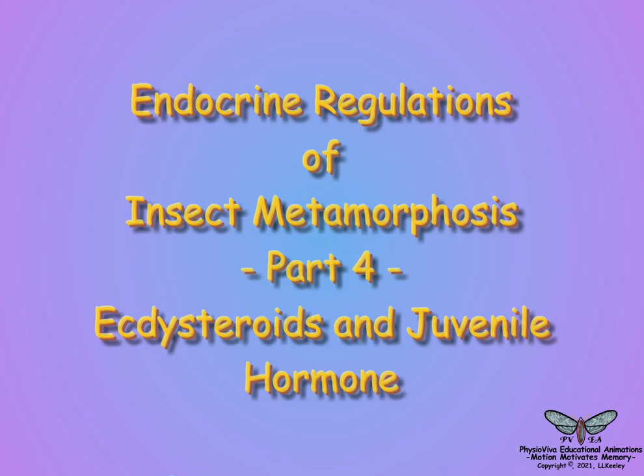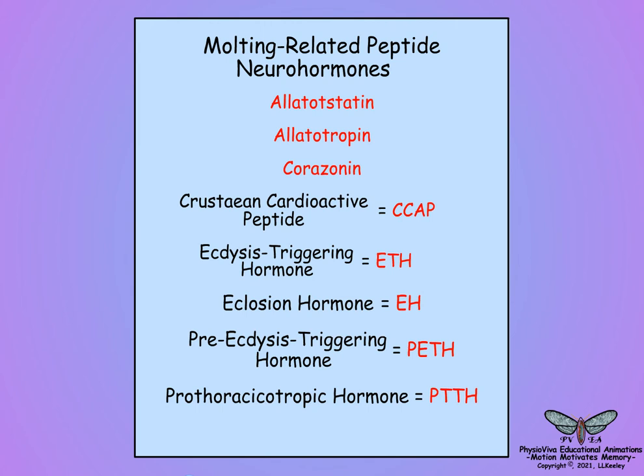This scene will discuss the roles of ecdysone and juvenile hormone in regulating insect metamorphosis. Previous scenes discussed that multiple neurohormones were required to regulate the physiological and behavioral events related to molting.